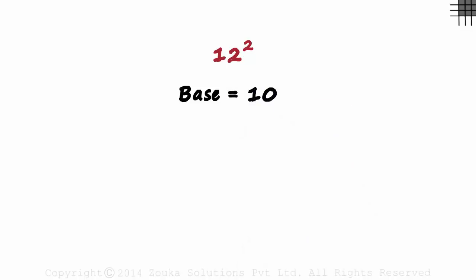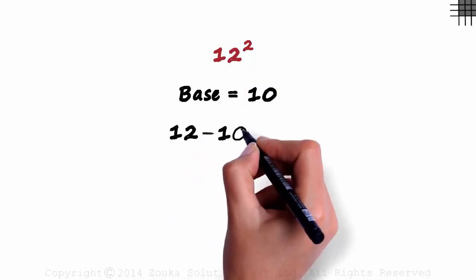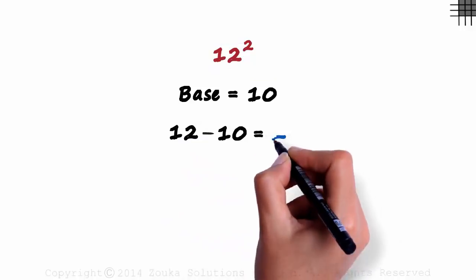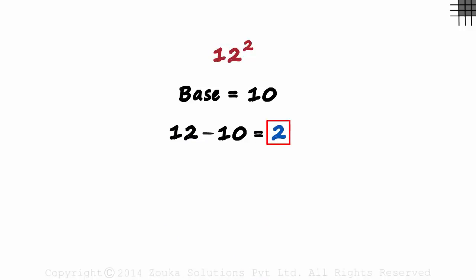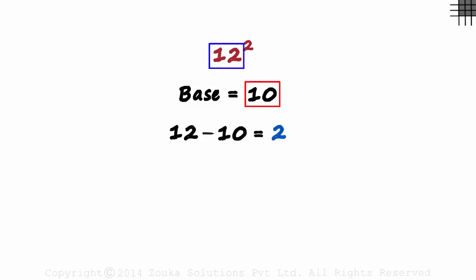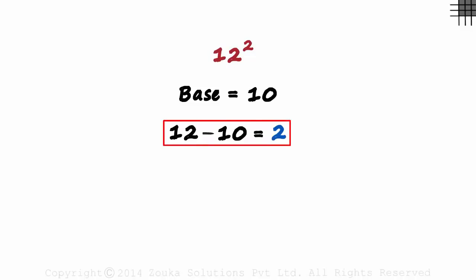Once the base is decided, we find the difference between the number and the base. That will be 12 minus 10, which equals 2. This number is really important — it's the difference between the number and the base. We chose the base which is close to the number, and then we found the difference between the base and the number.